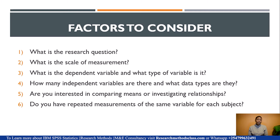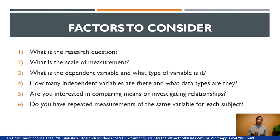The third factor is: what is the dependent variable, and what type of variable is it? The dependent variable is key because it determines the statistical tool. If you have a categorical dependent variable versus a continuous dependent variable, you may not use the same statistical test. For instance, Spearman is used for a categorical dependent variable, whereas Pearson is for a continuous dependent variable. We also ask: is it a binary categorical variable, a discrete quantitative variable, or a continuous variable?